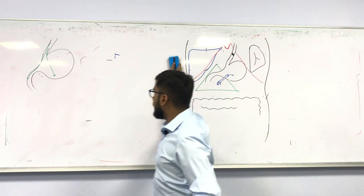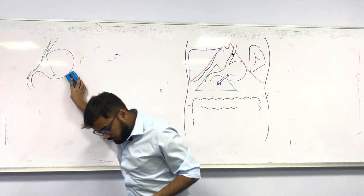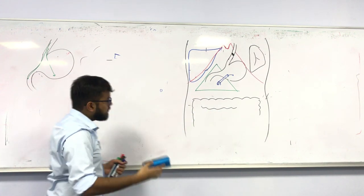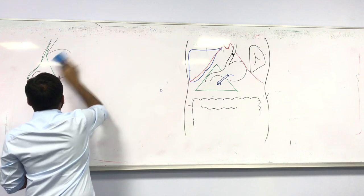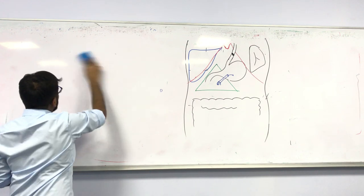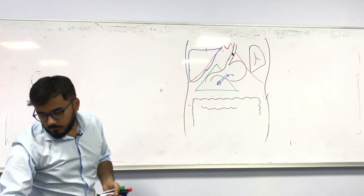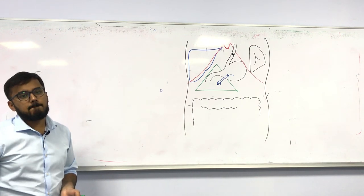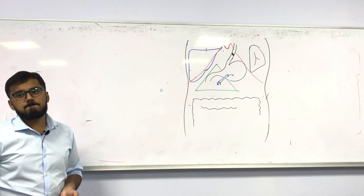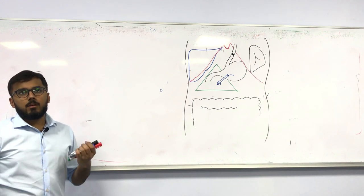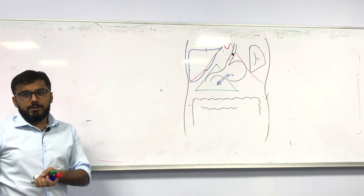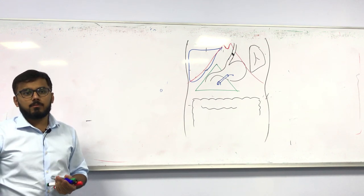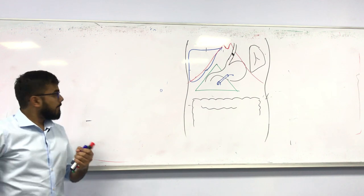The liver is located in the abdomen in the right hypochondriac region, the epigastric region, and the right lumbar region.